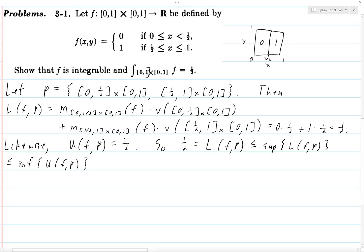So we have this infimum here, and this is going to be - this is the infimum over all partitions, so it's going to be in particular less than or equal to U(f) at a particular partition p, which is again 1/2.